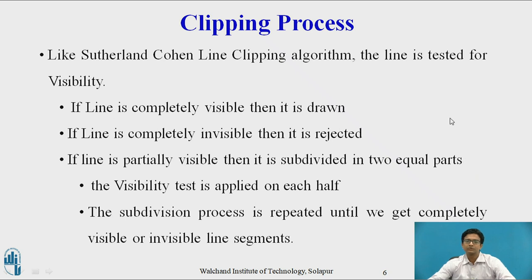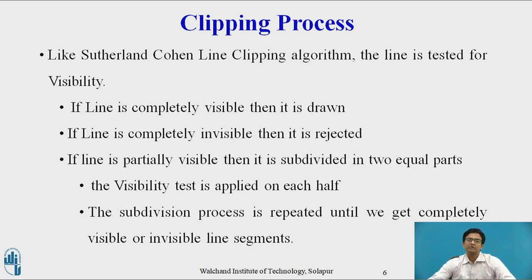Like Sutherland-Cohen Line Clipping Algorithm, the line is tested for visibility: if the line is completely visible then it is drawn; if the line is completely invisible then it is rejected, i.e., if the line is outside the window it is rejected; and if the line is partially visible then it is subdivided into two equal parts. The visibility test is applied on each half and the subdivision process is repeated until we get completely visible or invisible line segments.